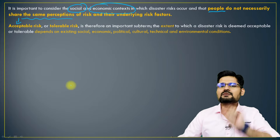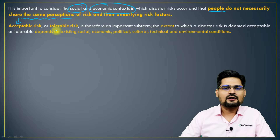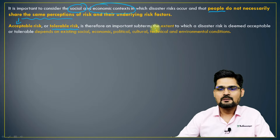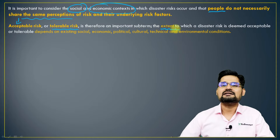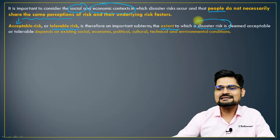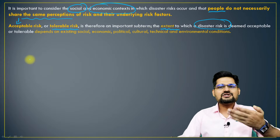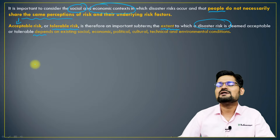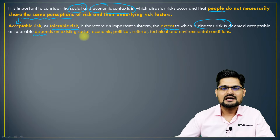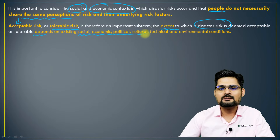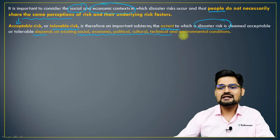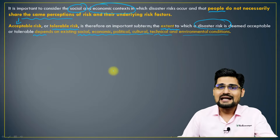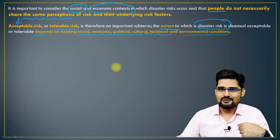There is something called acceptable risk or tolerable risk — one important category related to the extent to which disaster risk is deemed acceptable. How much risk is acceptable or tolerable will depend on certain parameters: existing social, economic, political, cultural, technological and environmental conditions. That is the amount of risk we need to take in order to develop around us.